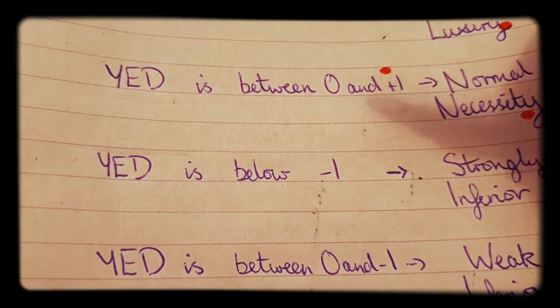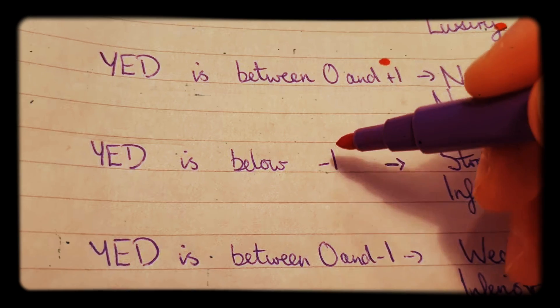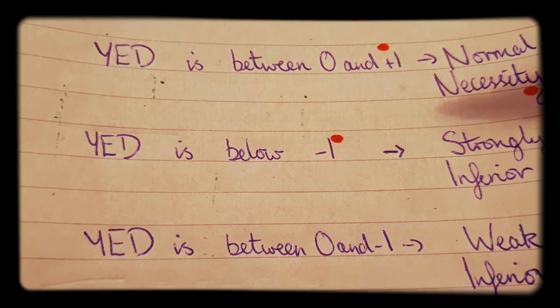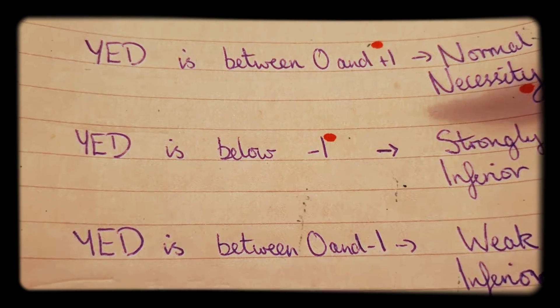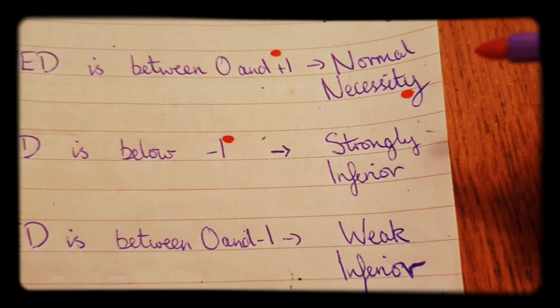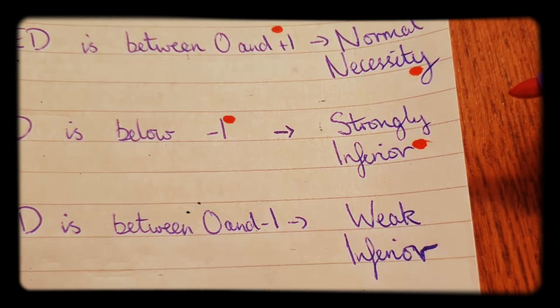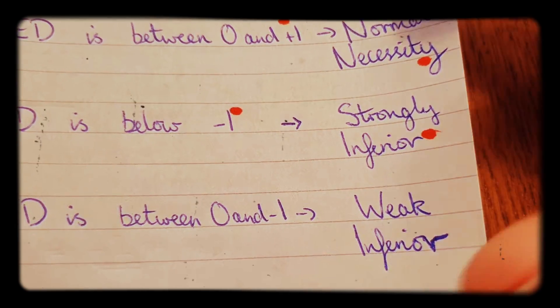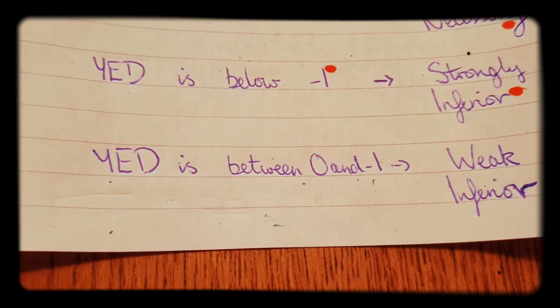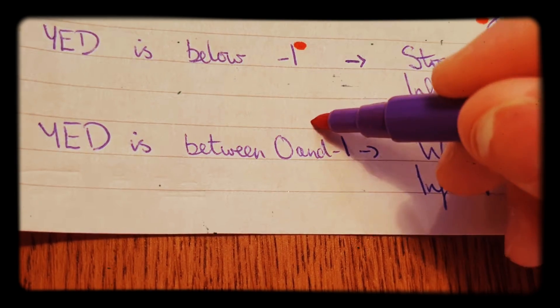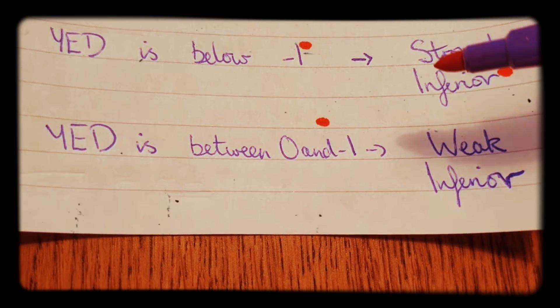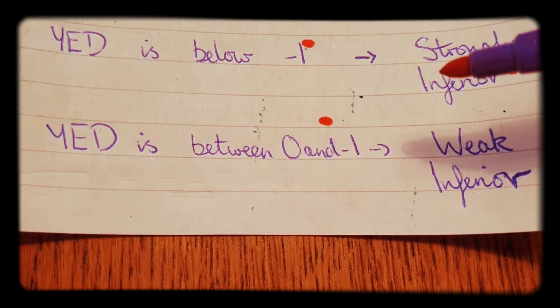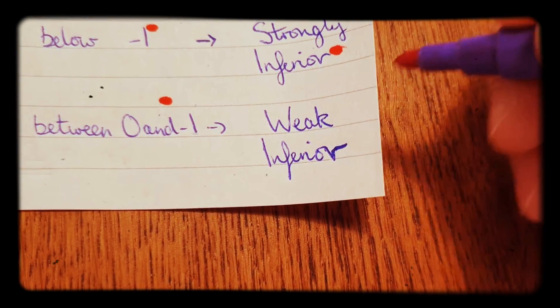If YED is below minus 1, so it's a minus number, it might be like minus 2 or minus 3 for example, then this is a strongly inferior good. So if your income goes up you really don't want to buy any more of that. If YED is between 0 and minus 1, so it might be minus 0.5 or something like that, this is a weak inferior good.